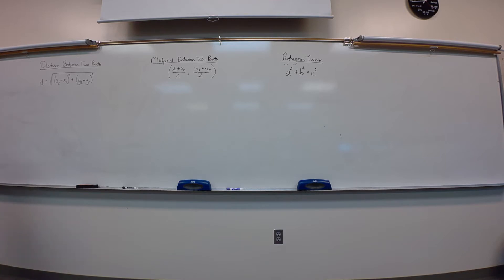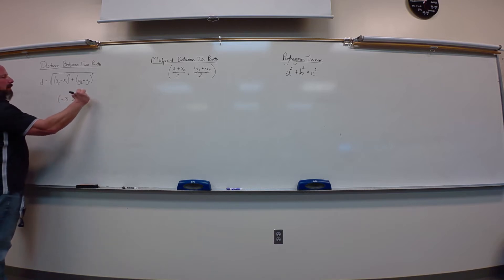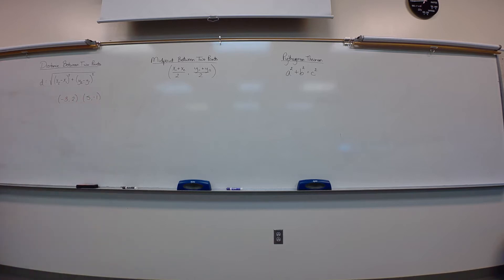So, distance between two points. Let's say we have two points on a graph: negative three, two, and we'll go five, negative one. Just make up two points there. The worst part is going to be the negatives that get us sometimes. So, distance equals square root. This just means the second X and the first X, the second Y and the first Y. Subscripts just mean first, second, whatever.